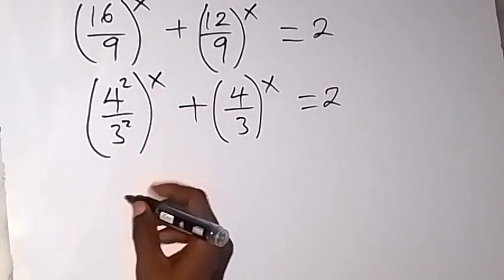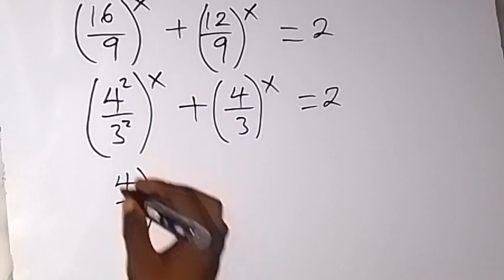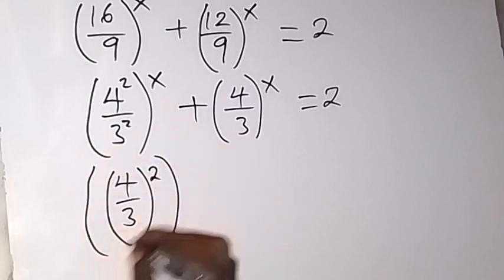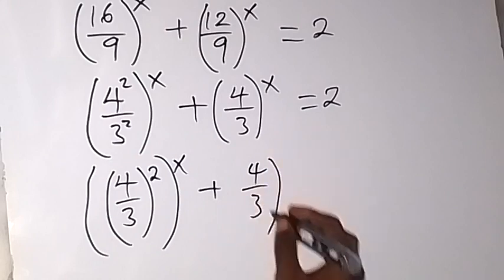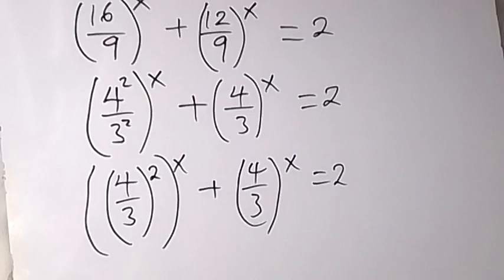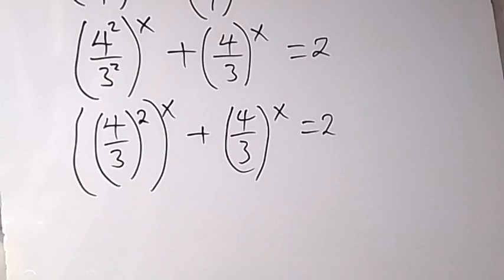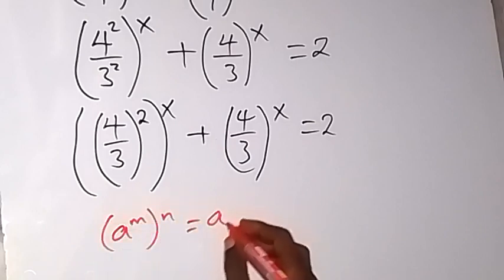We have a power of 2 that we can take out and say this is 4 over 3 raised to power 2, from the law of indices. We can still interchange this power — also from the law of indices. So when we have a raised to power m, then raised to power n, this is a raised to power mn, which can also be written as a raised to power n, then raised to power m. We can interchange the powers there.